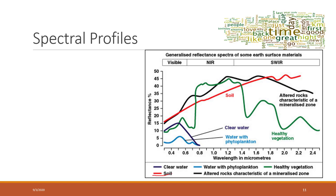For example, if you look at soil — shown by the red line — soil tends to have lower reflections in the shorter wavelengths, higher reflections in the near-visible band, and more reflections in the longer wavelength span.